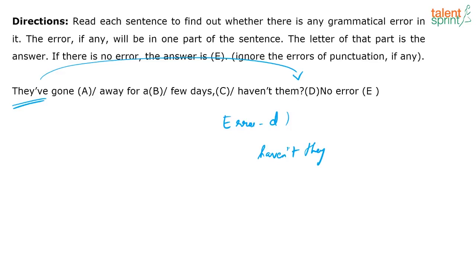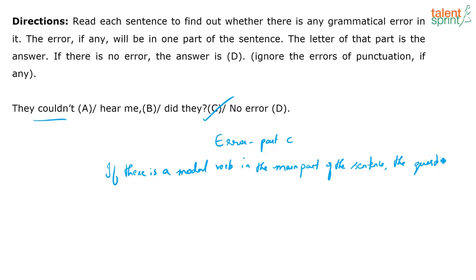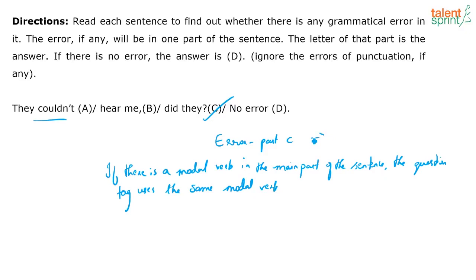Next: 'They couldn't hear me, did they?' The error is in part C. The rule is: if there is a modal verb in the main part of the sentence, the question tag also uses the same modal verb. So it will be 'they couldn't hear me, could they?' — keeping in mind that because the main statement is negative, the tag is positive.